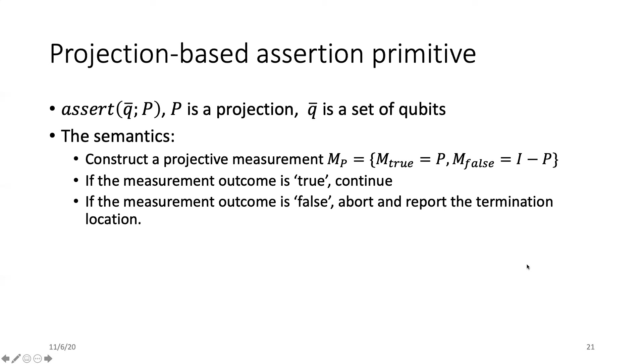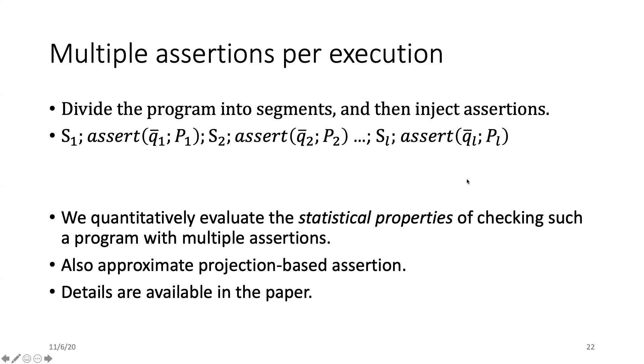After all these discussions, we can now define the projection-based assertion. It is basically a projection P over a set of qubits q̄. The semantics of this projection is that when running this, we first construct a projective measurement based on P and then perform the measurement. If the measurement outcome is true, we continue. If the measurement outcome is false, we abort and report the termination location. Since our projection-based assertion will not change the test state once it is correct, we can now insert multiple assertions in one execution to enable more efficient debugging. We study the statistical properties of checking a quantum program with multiple assertions, like how many executions are required to achieve a statistically guaranteed program behavior. And we also have approximate projection-based assertions. All the details are available in our paper.